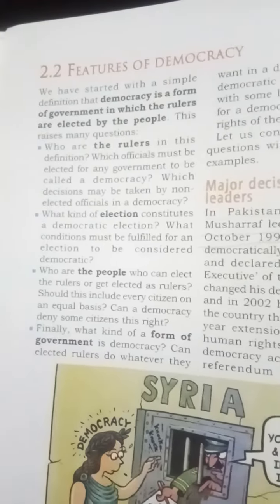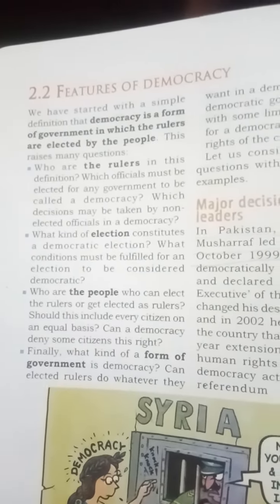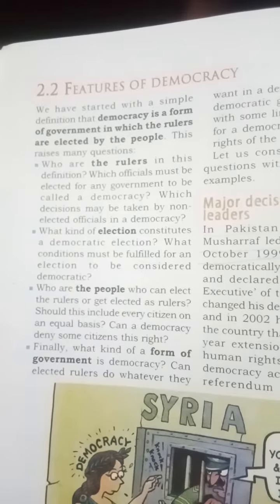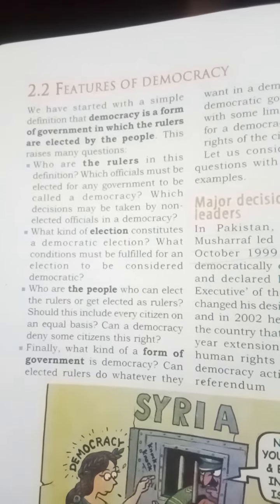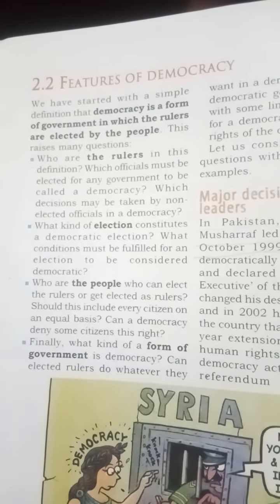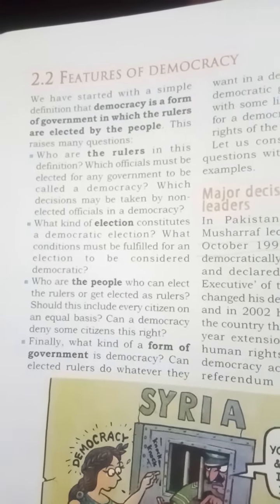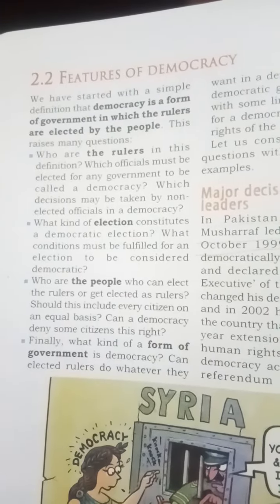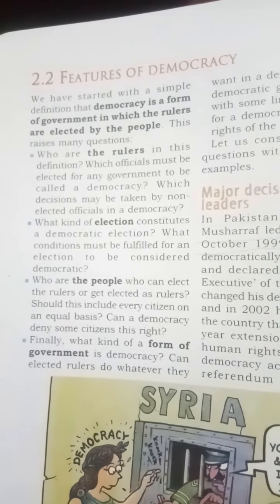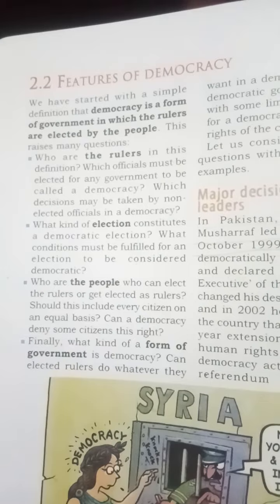Hello students. This time I have the book Democratic Politics, and now I'm going to discuss 2.2 Features of Democracy. We have started with a simple definition that democracy is a form of government in which the rulers are elected by the people.